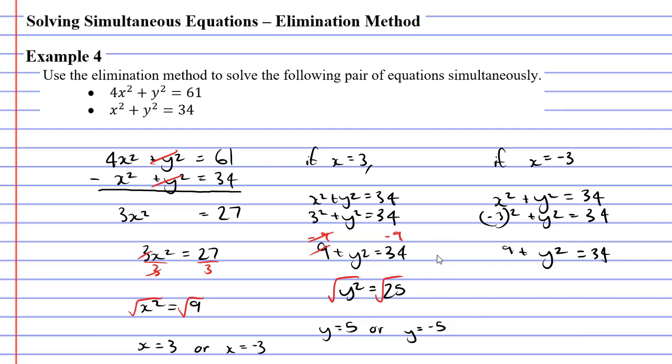So if I was to continue the same working out, I'm going to get the same result as I got before. I'm going to end up with y² = 25, and when I square root both sides, once again, I will get two results for y. y can equal 5, or y can equal -5.